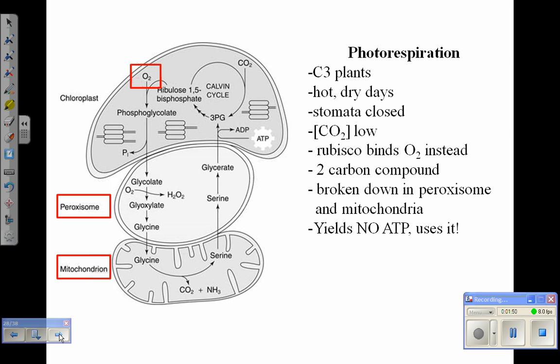When rubisco binds oxygen, it pulls oxygen into the Calvin cycle by mistake and fixes it into two carbon compounds.